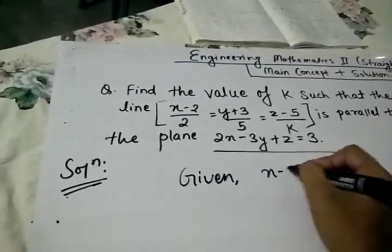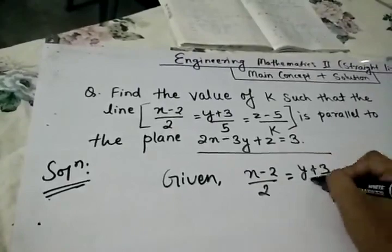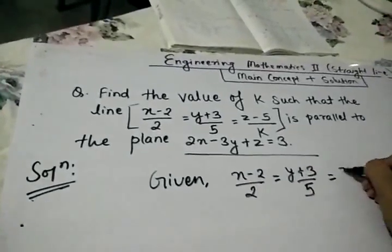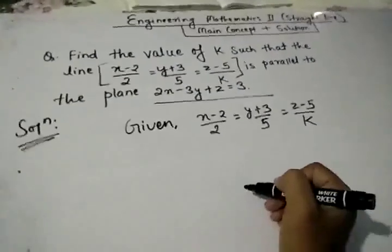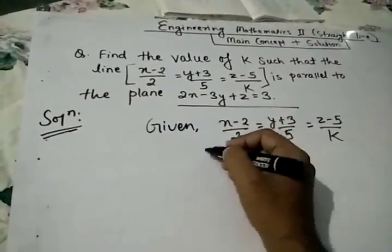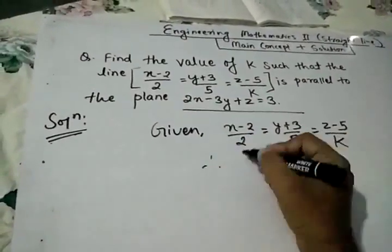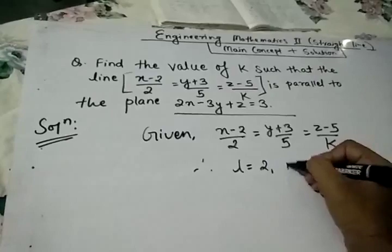Given: (X - 2)/2 = (Y + 3)/5 = (Z - 5)/K. Therefore L = 2, M = 5, N = K.